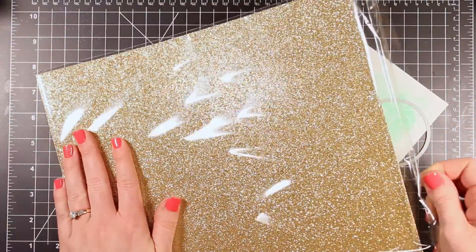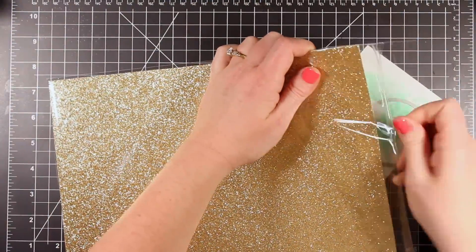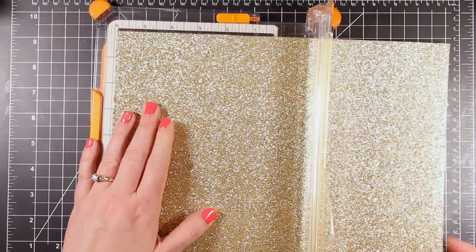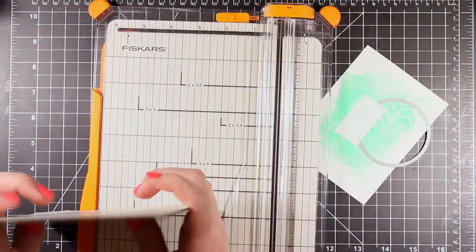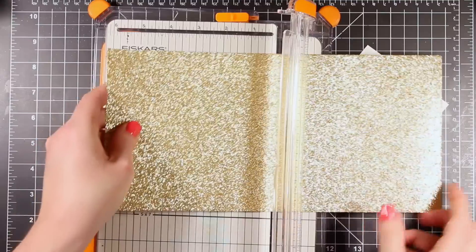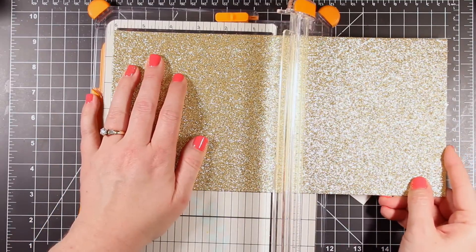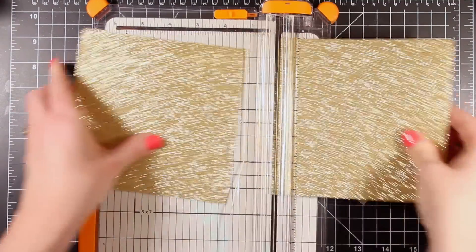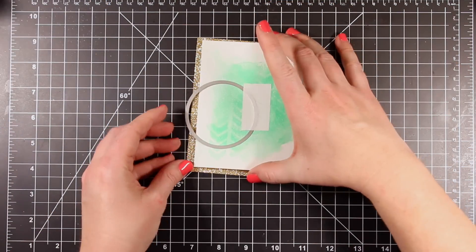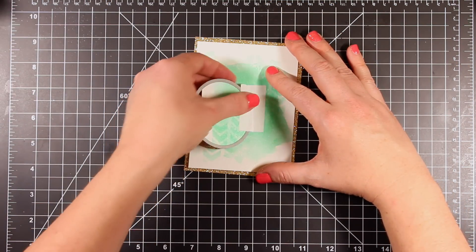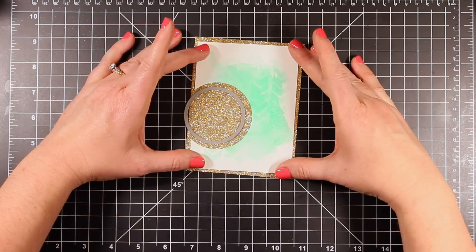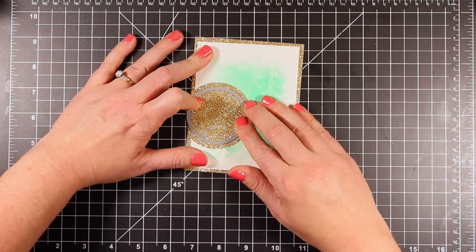I went ahead and die cut my window on the front of my watercolor piece and I used the My Favorite Things Pierce Circles Stacks dies. I'm showing you my favorite glitter paper. This is from American Crafts. It comes in these 12x12 sheets but I like to cut it down into four 6x6 pieces and I store it with my 6x6 pattern paper pads. It just makes it easier for me than coming up with some 12x12 storage for that.